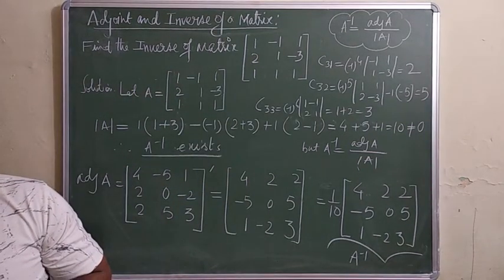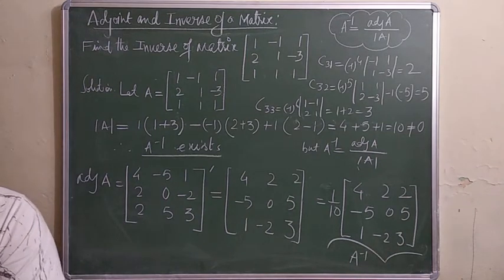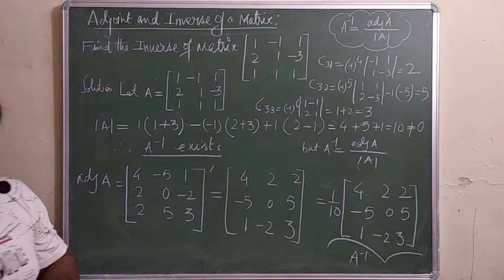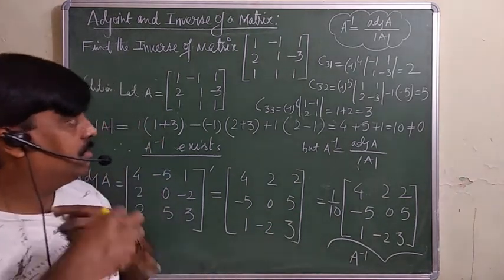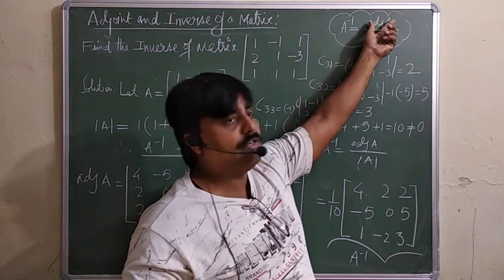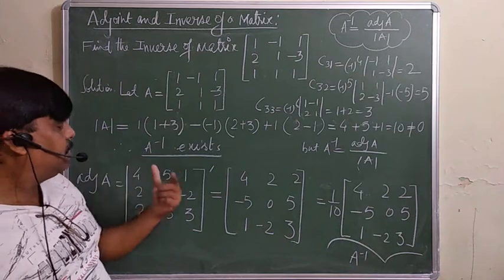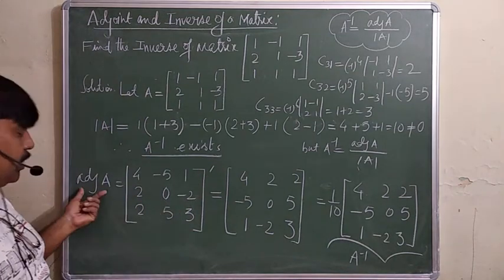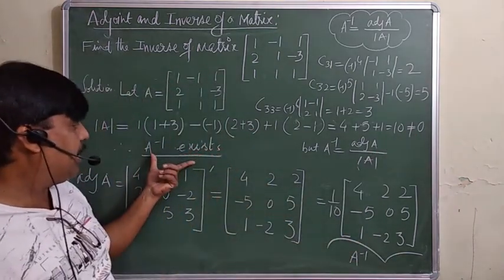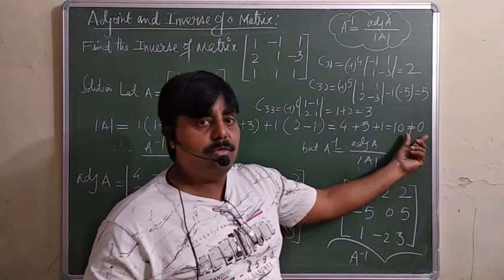We can verify the answer. To summarize the procedure: first find adj(A) by computing cofactors for every element and taking the transpose; then divide by the determinant. The inverse exists only when the matrix is non-singular — meaning the determinant must not equal 0.